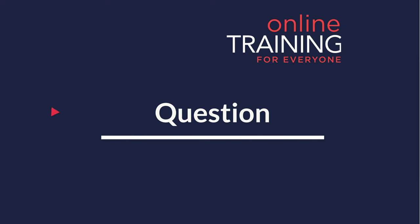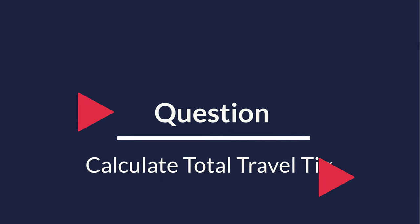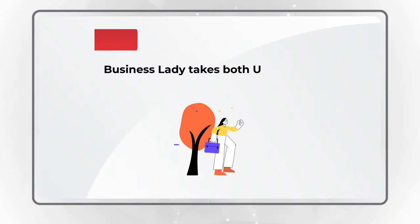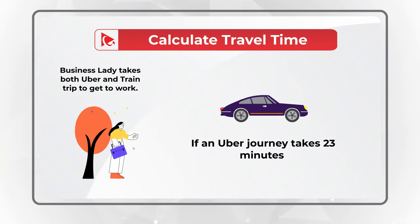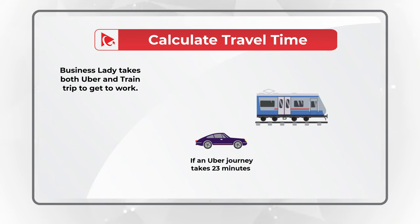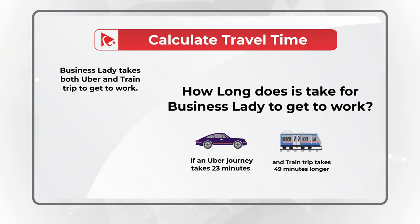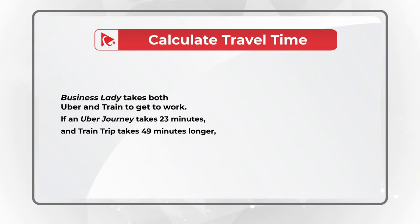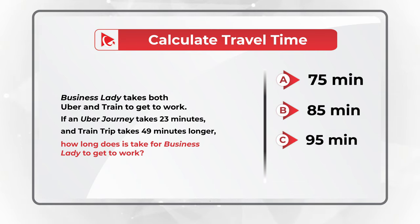Here is a very tricky test problem where you need to calculate total travel time. A business lady takes Uber and train to get to work. If an Uber journey takes 23 minutes and the train trip takes 49 minutes longer, what is her total traveling time in minutes? You have four different choices: Choice A, 75 minutes; Choice B, 85 minutes; Choice C, 95 minutes; and Choice D, 72 minutes.